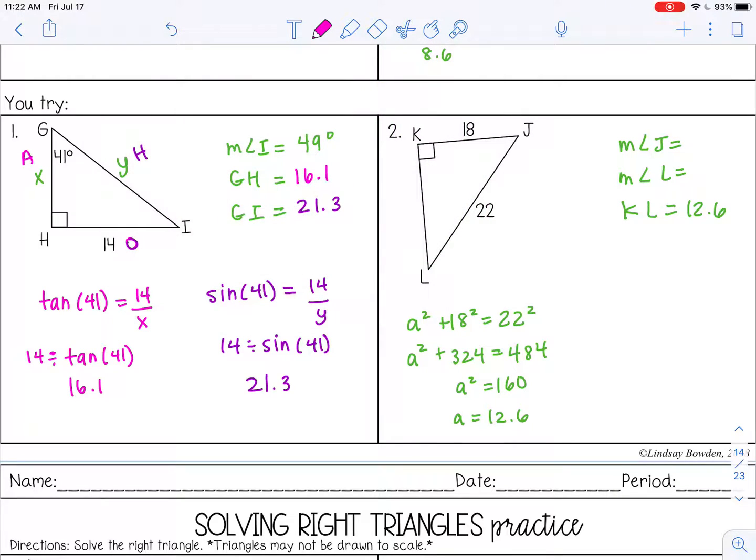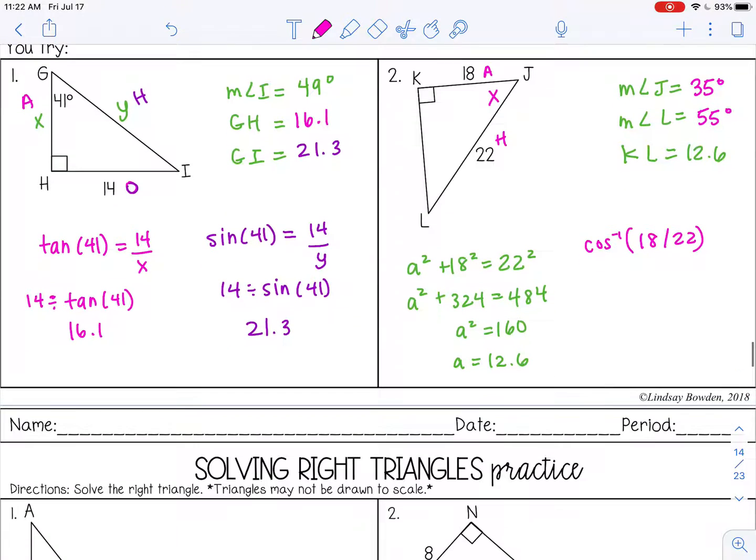Let's solve for angle J. So this would be adjacent and hypotenuse, so cosine. Use the inverse because I'm trying to find an angle. So that would be about 35 degrees. And then I can just take 90 minus 35 which gives me 55 degrees for angle L. Go ahead and stop the video now and try solving right triangles practice and check it with your teacher.